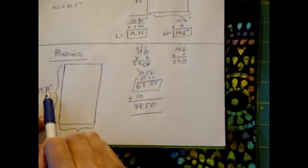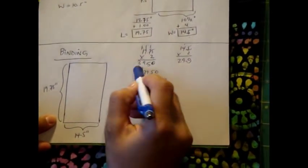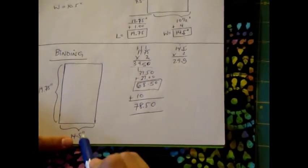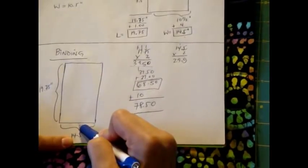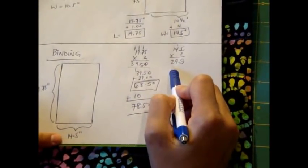Which means I'm going to have 19 and 3 quarters times 2, which I have here is 39 and a half inches. That accounts for this side and this side, and then 14 and a half times 2 for this and here is going to give me 29 inches.